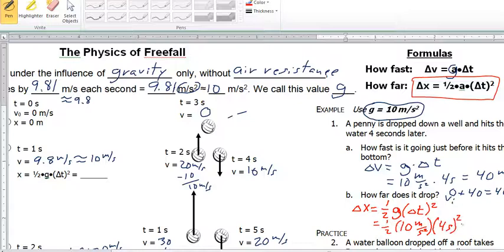10 meters per second squared times the time of 4 seconds squared. Now, we have to evaluate this. Remember your orders of operation. Do your squaring first. 4 squared is 16, times 10 times 1/2.